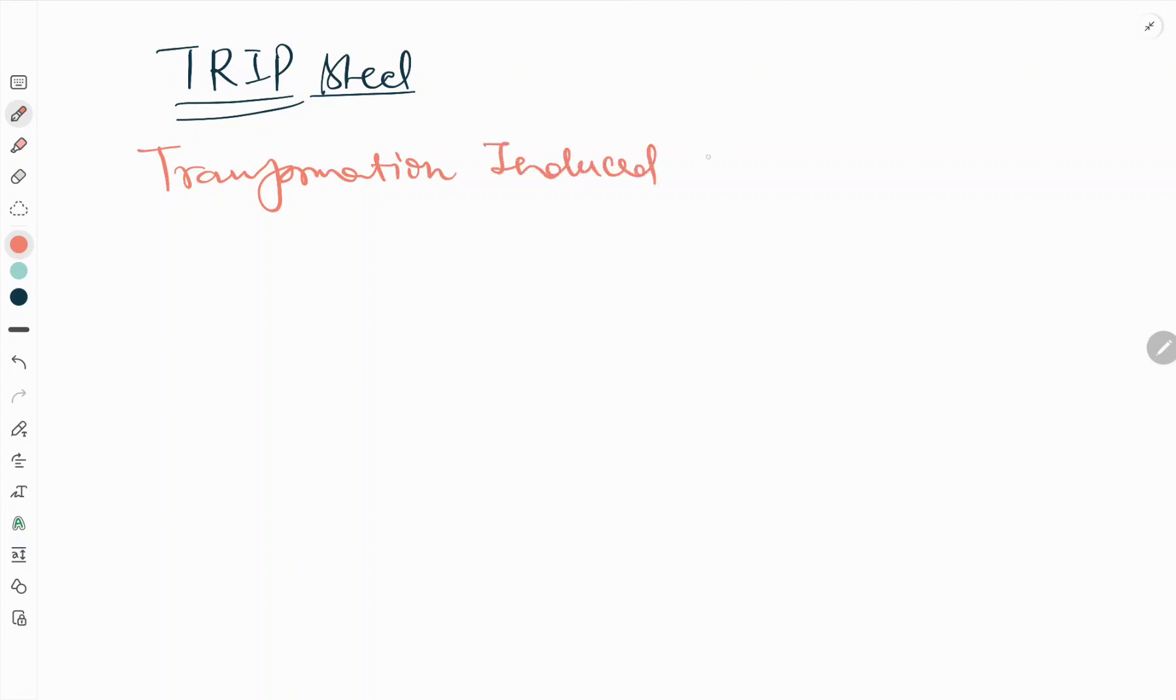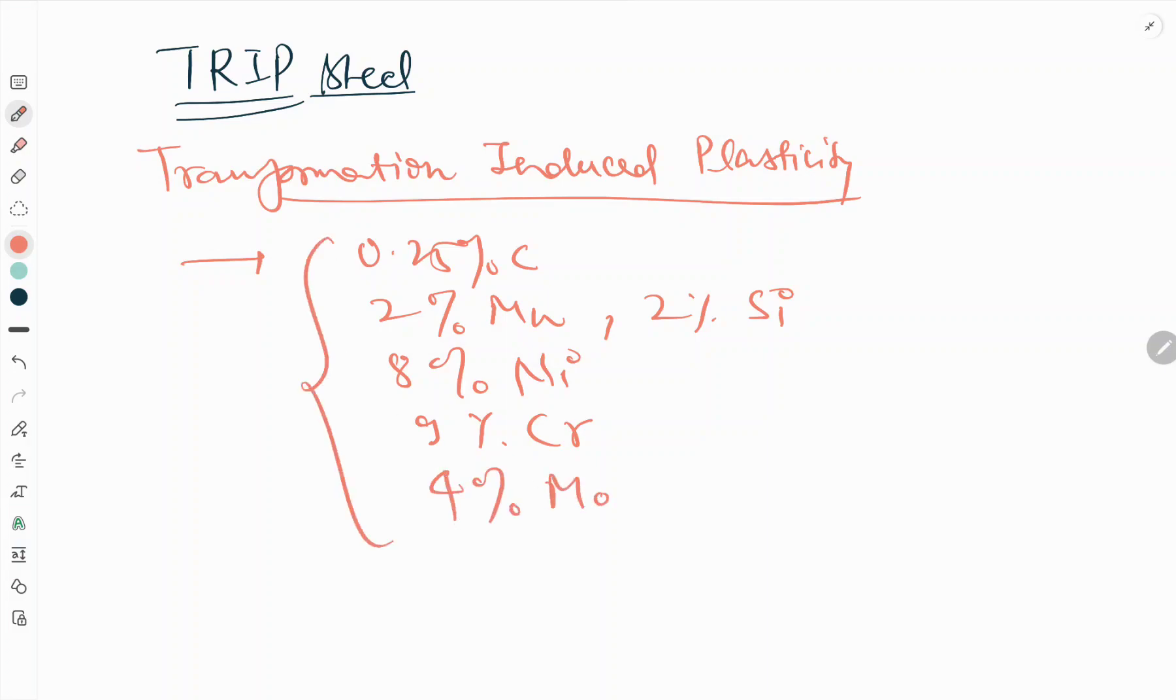transformation induced plasticity. So typical composition of TRIP steel is 0.25% carbon, 2% Mn, 8% nickel, 2% silicon, 9% chromium, and 4% molybdenum.